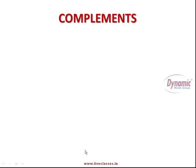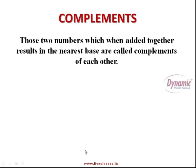What are complements? Those two numbers which when added together result in the nearest base are called complements of each other. That means whenever the addition of two numbers gives a base, they are called complements. For example, 57 plus 43 equals 100, so 57 and 43 are complements of each other.